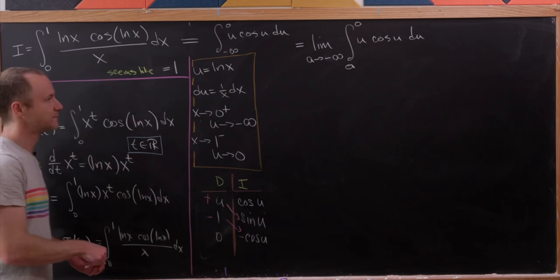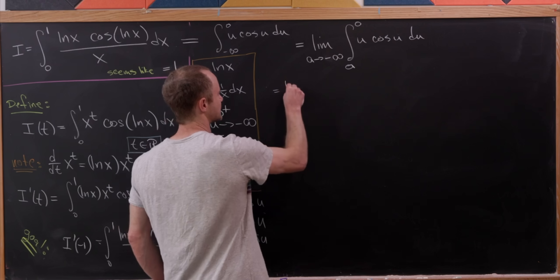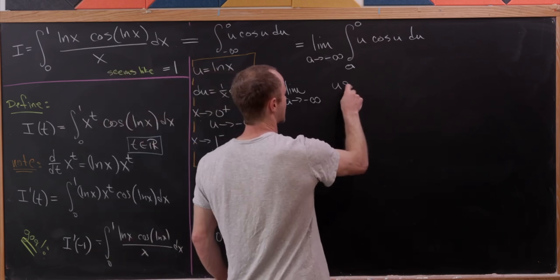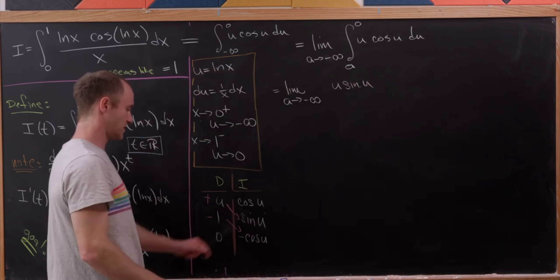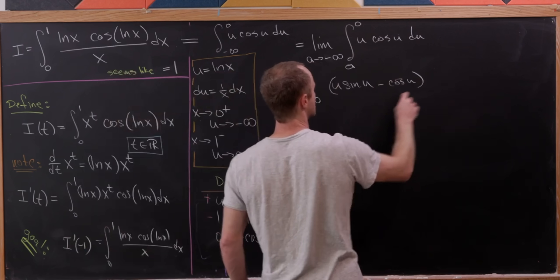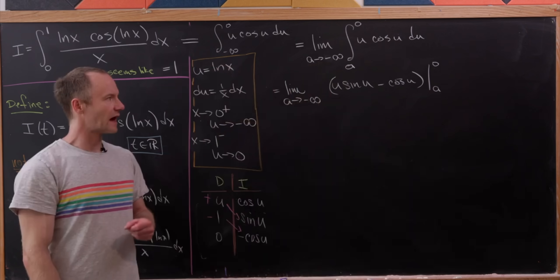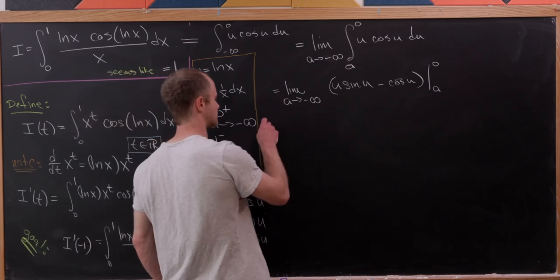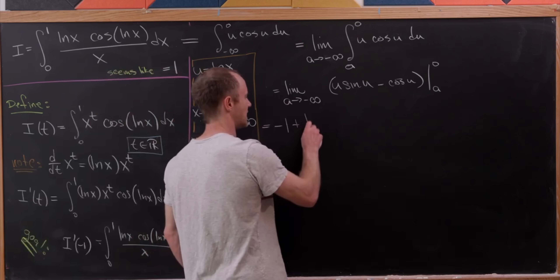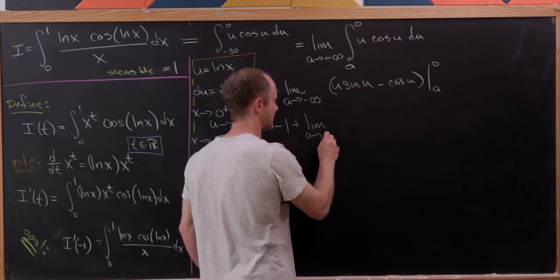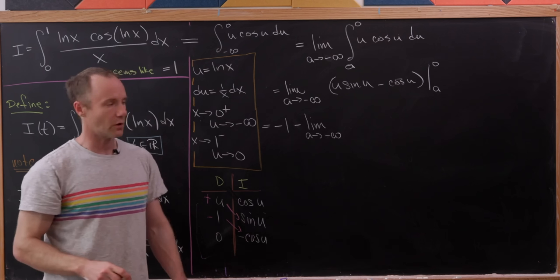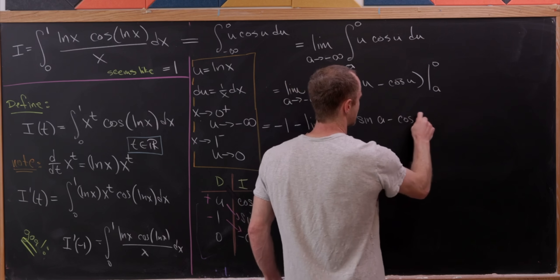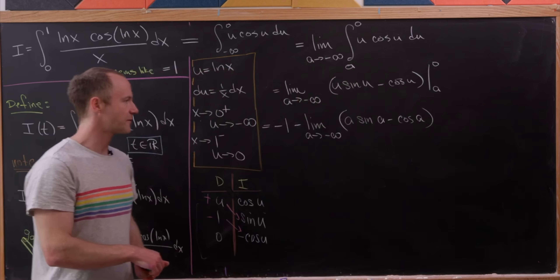Matching on the diagonal and alternating signs, we have the limit as a approaches minus infinity of u times sine of u minus cosine of u, evaluated from a up to 0. Evaluating at 0 gives 0 for the sine contribution and minus 1 for the cosine contribution. So we get minus 1, minus the limit as a goes to minus infinity of a times sine of a minus cosine of a.